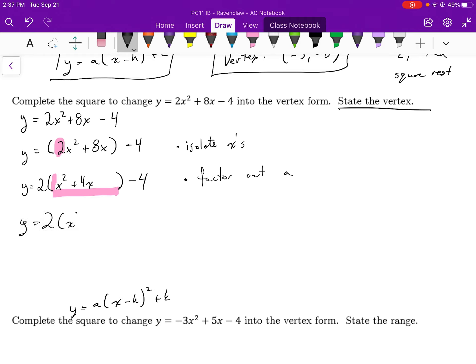So y equals 2 times x squared plus 4x minus 4. What constant must I add here? I go over to the side and I do some math. I take half of 4, I square that. So 4 divided by 2 is 2 squared. The constant that I would add is 4.